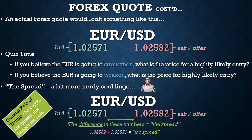The spread is the difference between what people are willing to buy for — the bid — and what people are willing to sell for — the ask. General rule of thumb: the bigger the spread, the bigger the risk. Forex brokers often use tight spreads as a sales pitch, meaning they're not giving you unnecessary risk. Quiz answer: the spread is simply the difference between the bid and the ask.